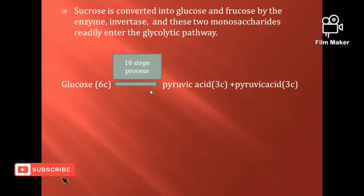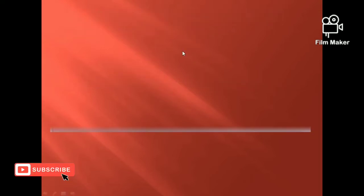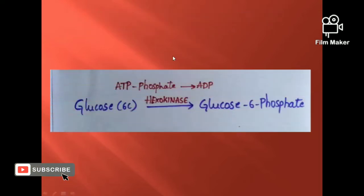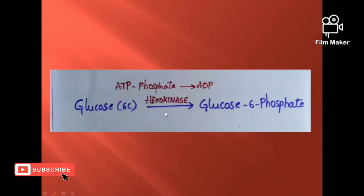The first step of glycolysis is glucose converted to glucose-6-phosphate in the presence of enzyme hexokinase. This step requires ATP as the energy input — it is an energy-consuming step.